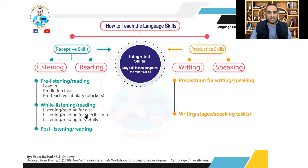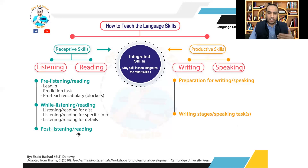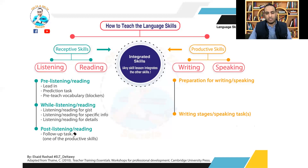Listening or reading for specific information and for details is not a must — it depends on the text, because not all texts lend themselves to all the sub-skills. After training the students in the sub-skills, you move on to one of the productive skills — writing or speaking — allowing students to move from receptive to productive, so they produce language rather than just responding to a reading or listening text. After that, you give some feedback and error correction depending on the task.